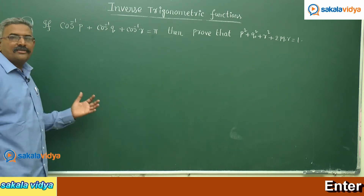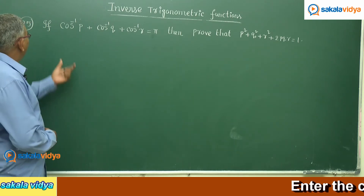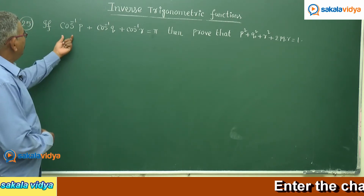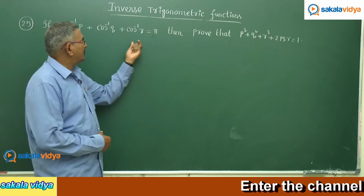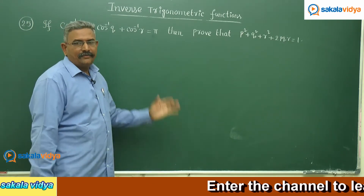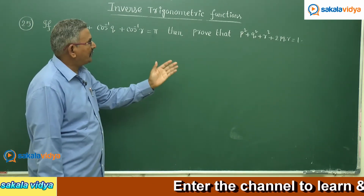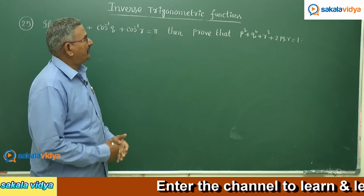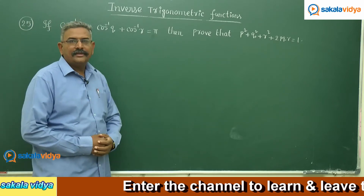Now let us solve this problem. cos⁻¹p + cos⁻¹q + cos⁻¹r = π. We need to prove that p² + q² + r² + 2pqr = 1.